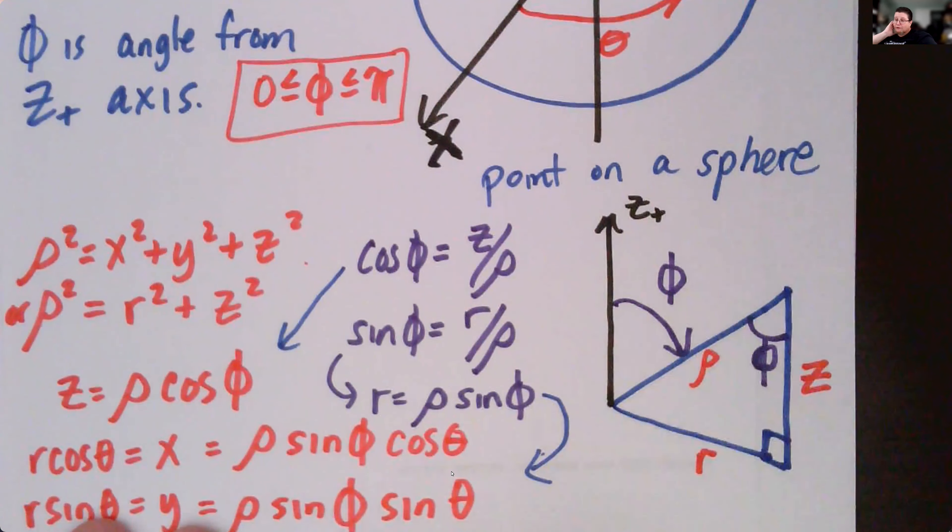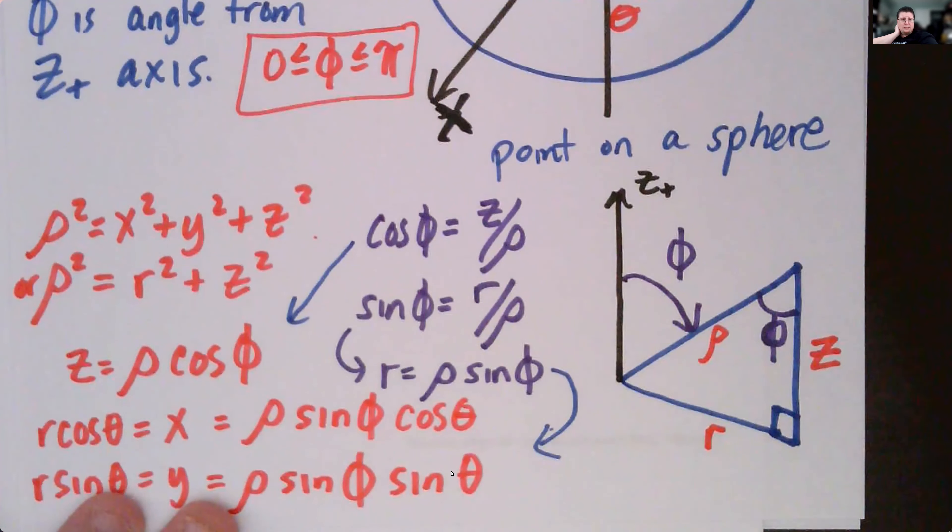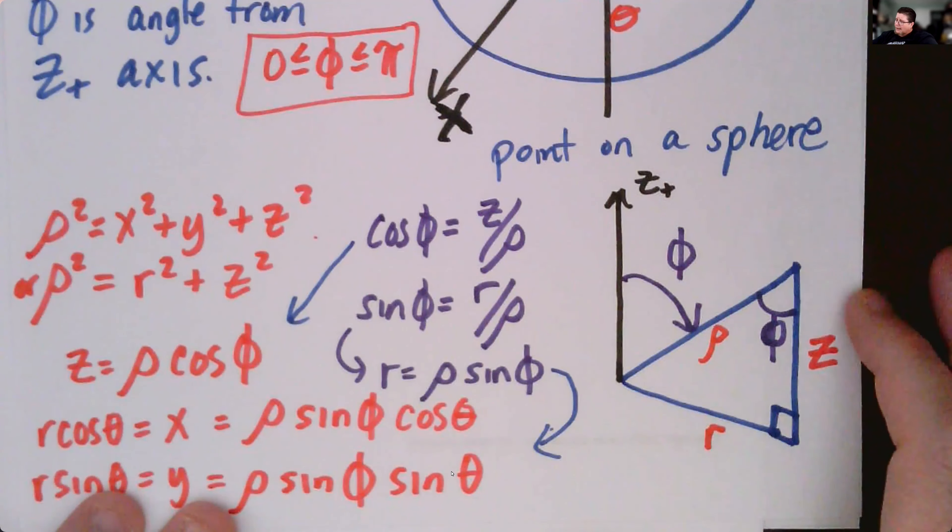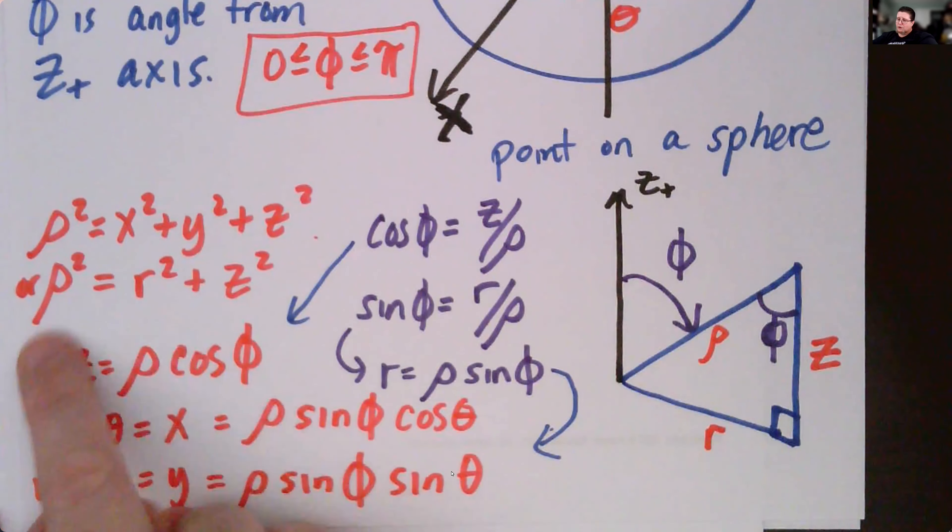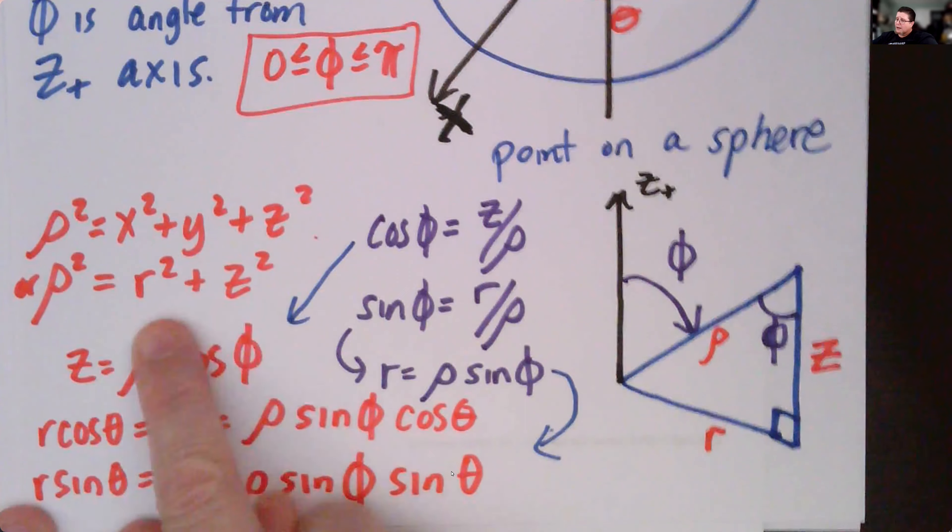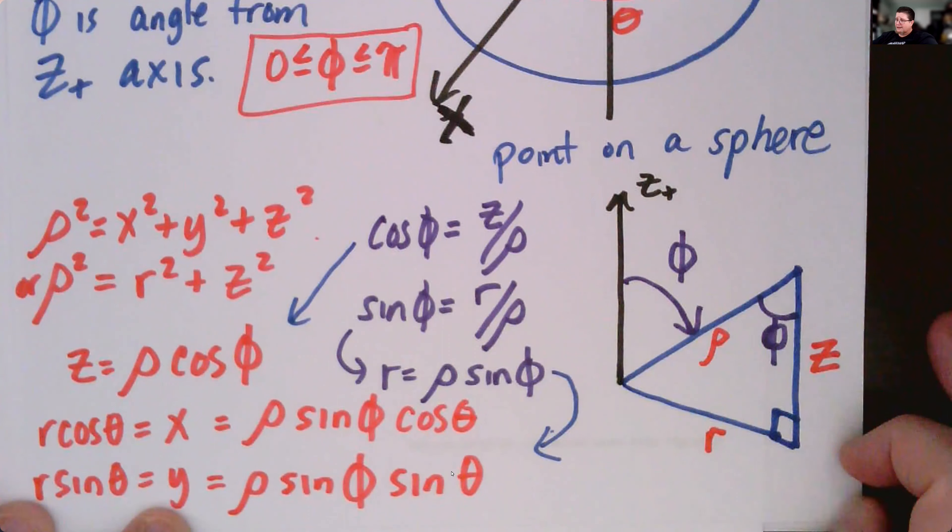And we're using rho for the radius. I don't know why they chose rho, since rho is density in physics. It seems like a bad choice to me, but it's been in play for a while and we can't rewrite mathematics for everyone in the world. We know x squared plus y squared is r squared, so we could look at rho squared in terms of that. If we look at our triangle here we can see that cosine phi